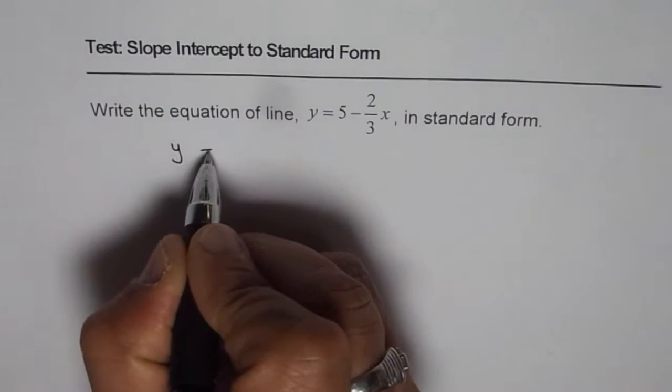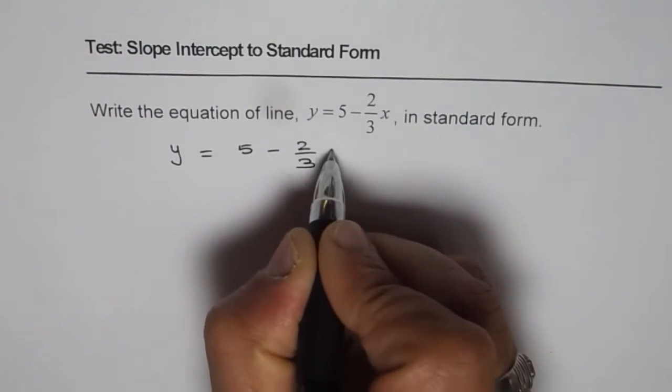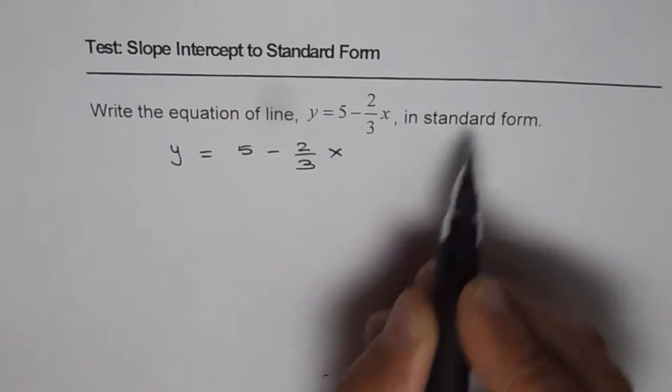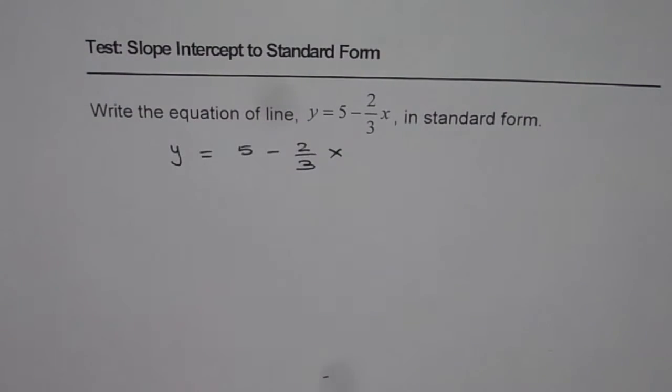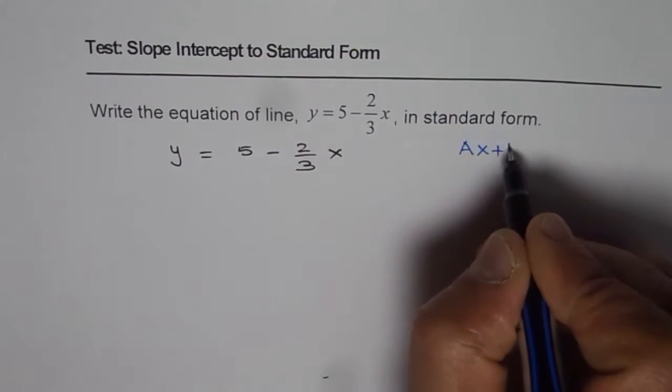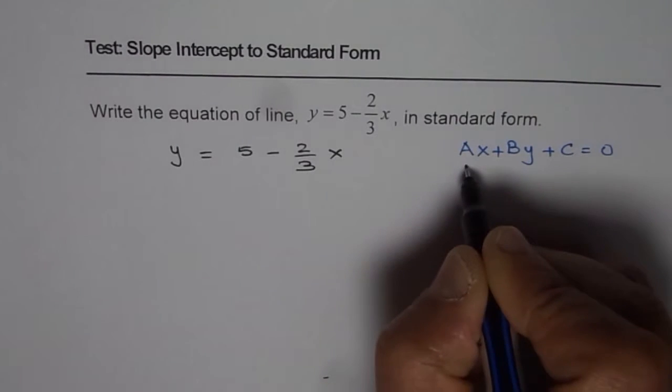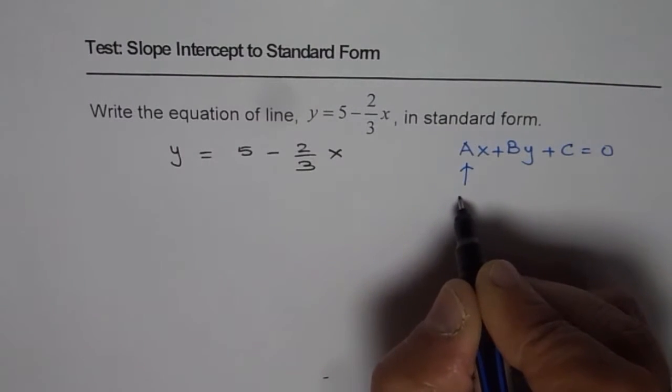We are given equation as y equals 5 minus 2 over 3x. We need to write it in standard form. Standard form means that we have to write it with the form ax plus by plus c equals 0. Remember, a should be always positive.